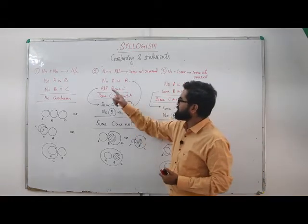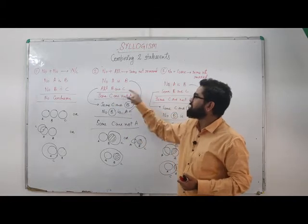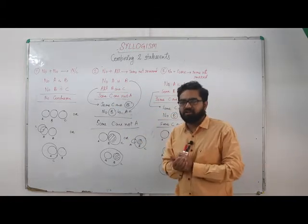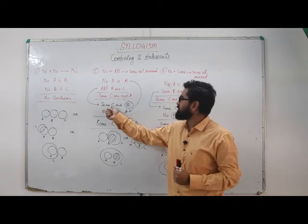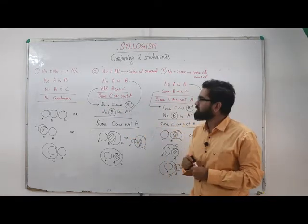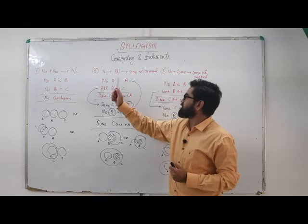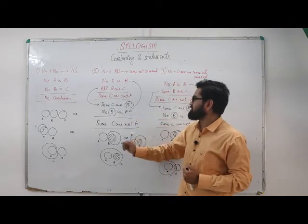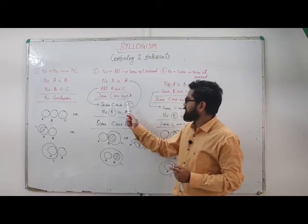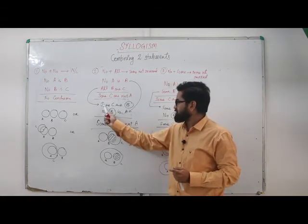Now let's look at these statements. I have all B are C. As we have learned in the first video, we can write it as some C are B. Similarly, we have the first statement as no A is B. If I reverse it, I'll write no B is A. The common term is B here.